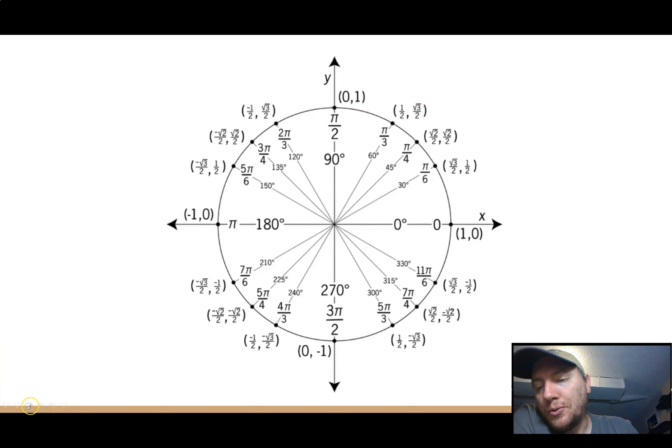So I'm looking on my unit circle anywhere I see a -1/2 or a 1 in my y-value. So let me get rid of those circles. A -1/2 or a 1 for the y-value. There's a 1, there's a -1/2, there's a -1/2. So my answers are π/2, 7π/6, and 11π/6.